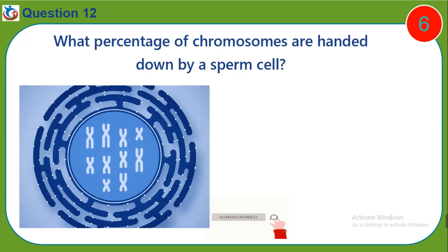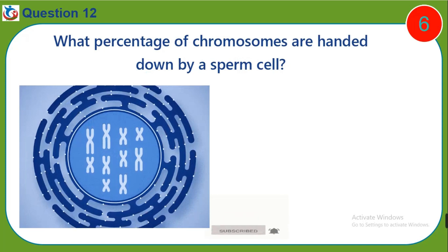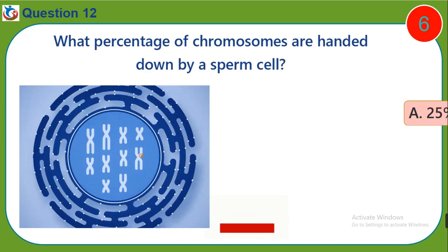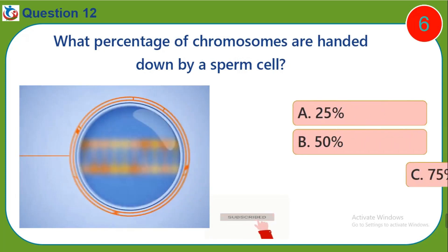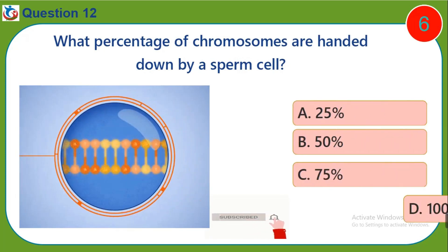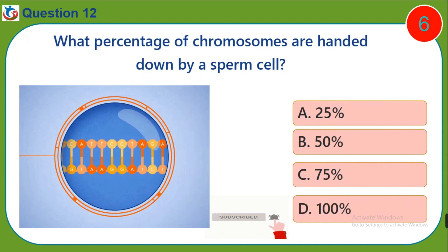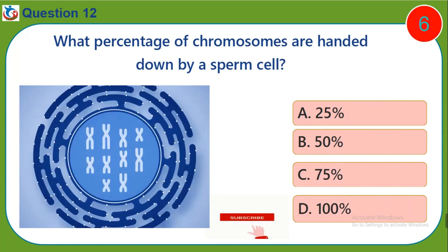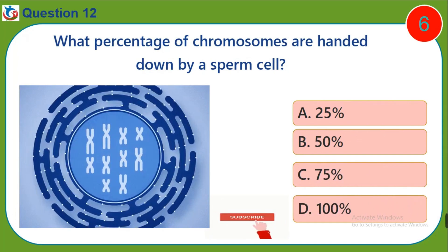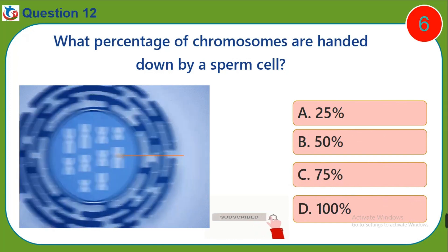Question twelve: What percentage of chromosomes are handed down by a sperm cell? a) 25 percent, b) 50 percent, c) 75 percent, d) 100 percent.